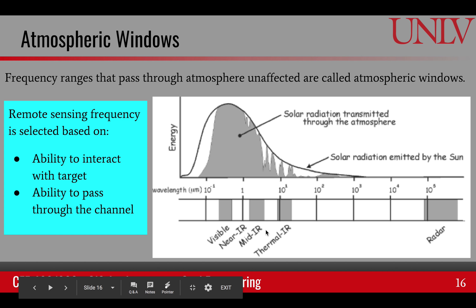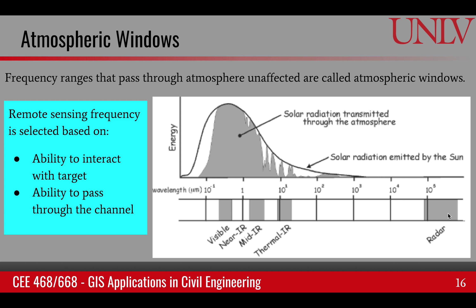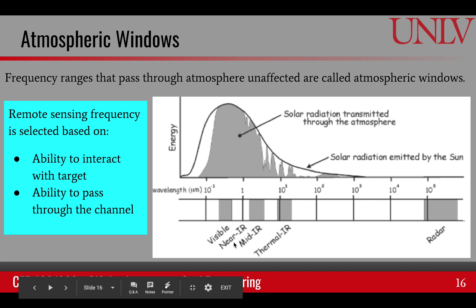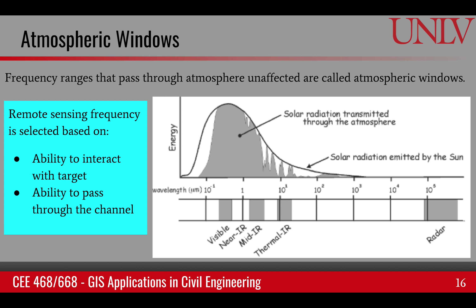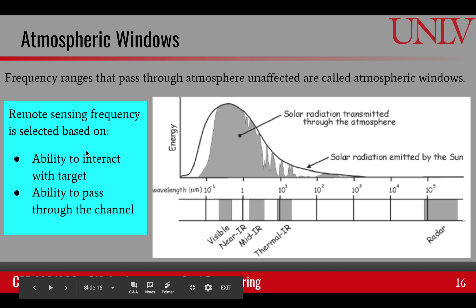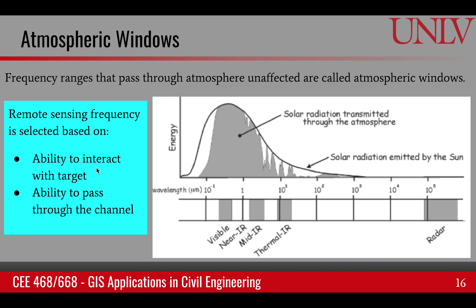Similarly, some infrared ranges are also not affected by the atmosphere, and radar frequencies are not very much affected either. These are very popular frequencies used for remote sensing of the ground surface, because if we are trying to look at the ground surface, we would choose frequencies that are not impacted by the atmosphere. The bottom line is that we choose the frequency based upon its ability to interact with the target and its ability to pass through the channel or intervening space without attenuation.